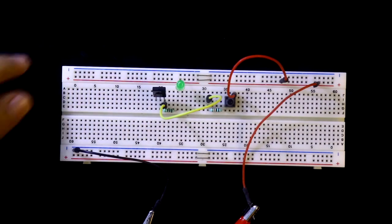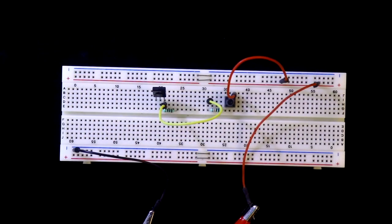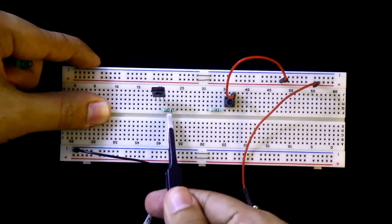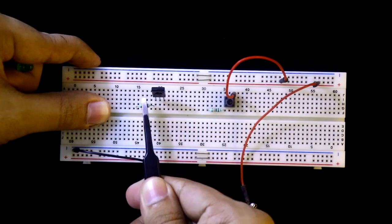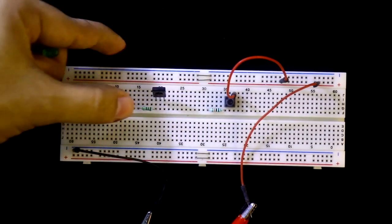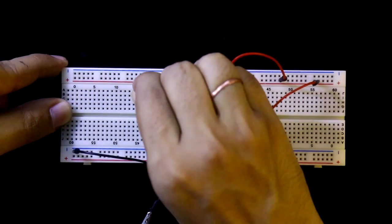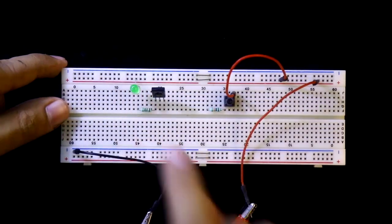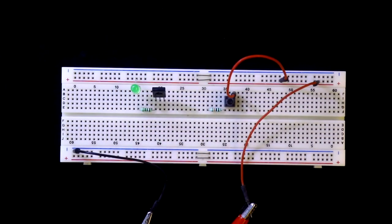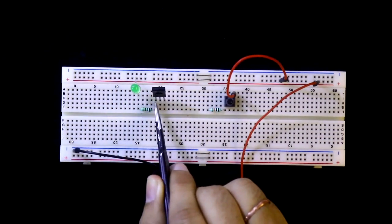So with the emitter we have to connect the load. Positive pin of the LED is connected to the positive, and the negative pin is connected to the resistor. And this resistor is connected to the emitter.